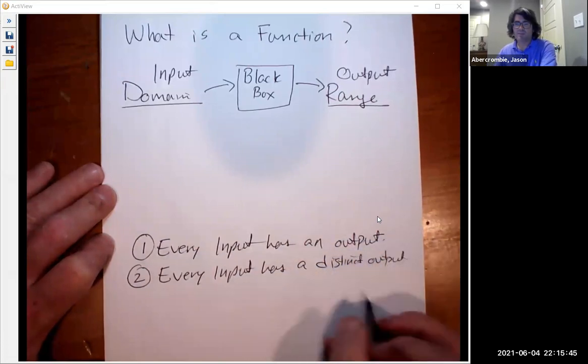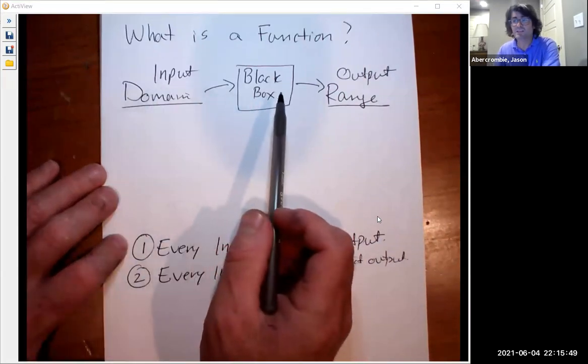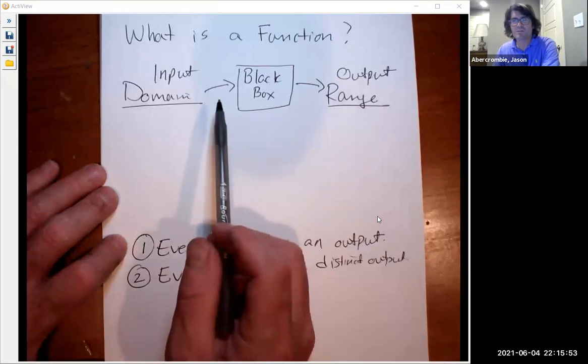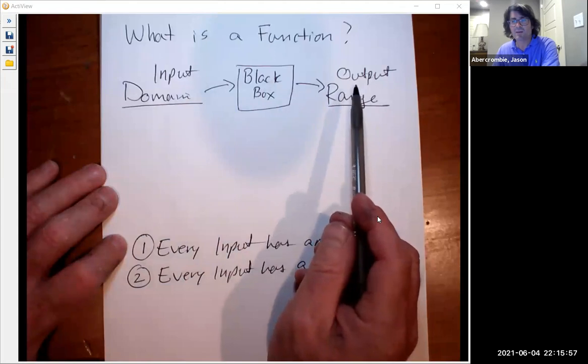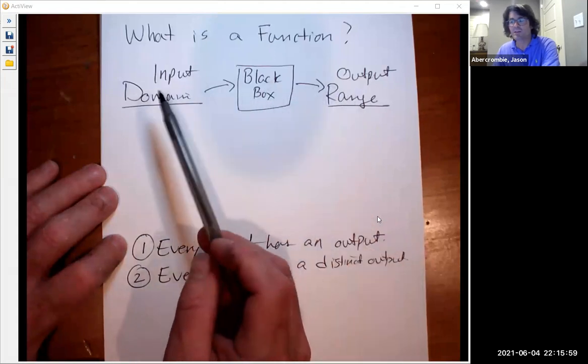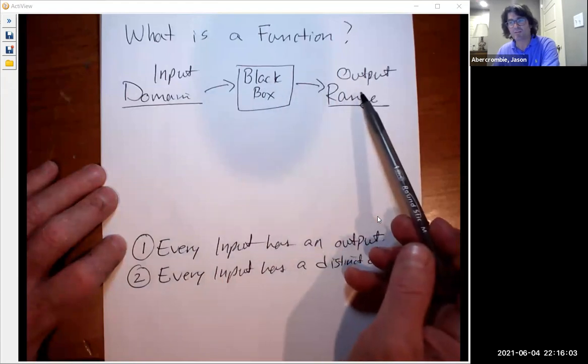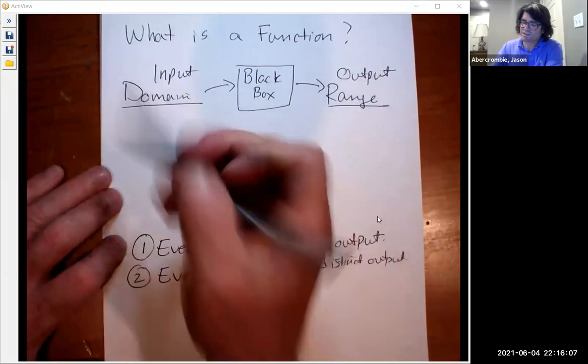That means that basically every input that you put into the black box has to give you some output, has to go somewhere. And also every time you put in a certain input, the output has to be the same. If you put in a certain input and one time it gives you one output, another time a different one, that's not a function.